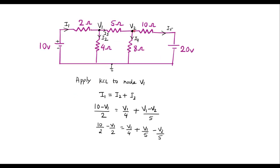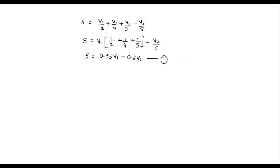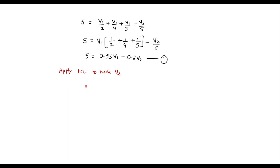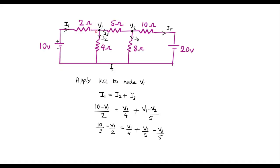Now apply Kirchhoff's current law to node V2. Here current I3 is incoming, while I4 and I5 are leaving the node. So I3 = I4 + I5.